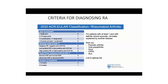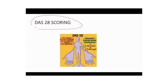The criteria for diagnosing rheumatoid arthritis: the 2020 ACR/EULAR criteria. You don't need to remember all scores, but remember four components: joint involvement, serology (anti-CCP antibodies), acute phase reactants (CRP and ESR), and duration of symptoms. A score of more than six is definitive for rheumatoid arthritis. There is also the DAS-28 scoring system to assess disease activity and how the disease affects day-to-day living — DAS stands for Disease Activity Score.